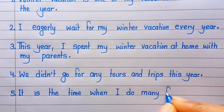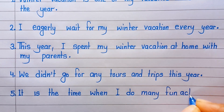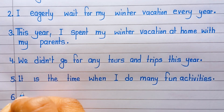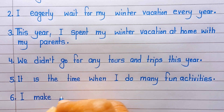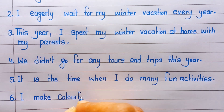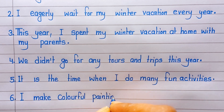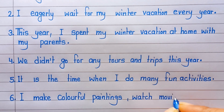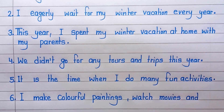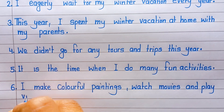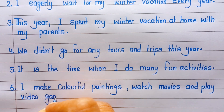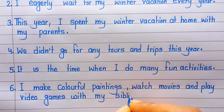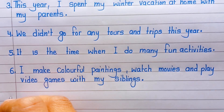Fifth line: it is the time when I do many fun activities. Sixth line: I make colorful paintings, watch movies, and play video games with my siblings.